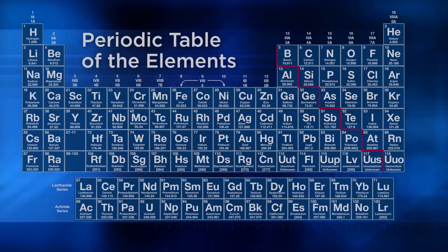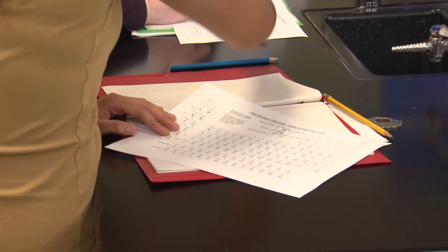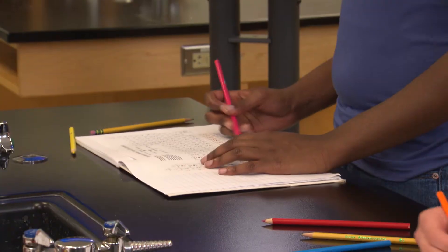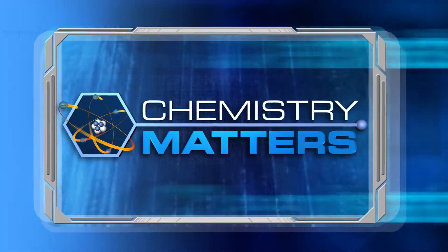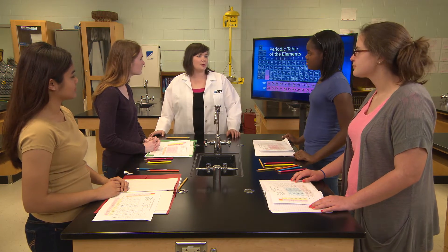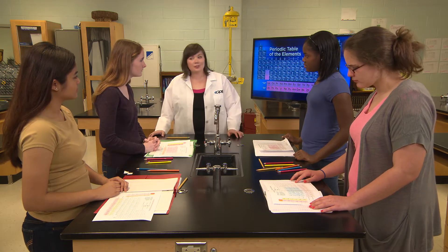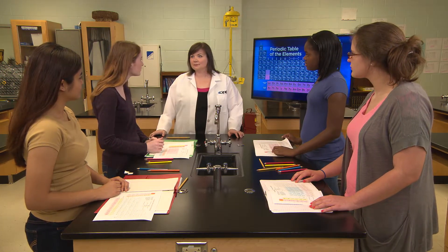Look at the bottom of your periodic table. Do you see those two rows that look like they were forgotten? These are called the lanthanide and actinide series because they start with lanthanum and actinium. Lightly color each row in another different color. Most metals conduct electricity well. Think about your element cards. What other elements from the activity were good conductors besides the transition metals? Sodium — but is that a metal? How about calcium? That's found in your bones, so it can't be a metal. You might be surprised to learn that both sodium and calcium are metals.